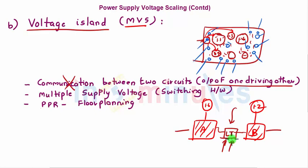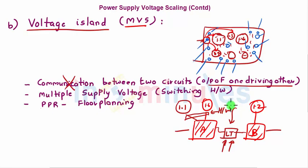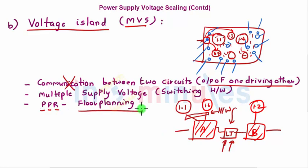Another drawback: if block A operates at 1.6 V at one point and needs to switch to 1.1 V at another, this switching of supply voltage depending on workload requires additional switching hardware. Furthermore, having different voltage islands and placing the corresponding circuits on an IC requires careful planning — placement, routing, and floor planning — which is quite challenging for the designer.